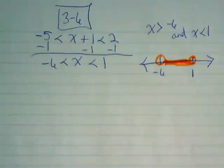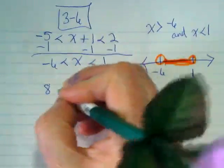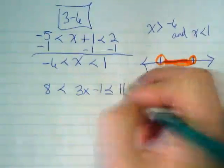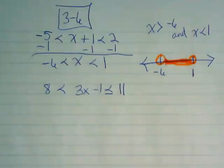Let's do another and one that's a little bit more complex. So 8 is less than 3x minus 1, which is less than or equal to 11. First thing we have to do is simplify this. By simplifying, we mean we need to get the x alone. It cannot be with any numbers inside this inequality.